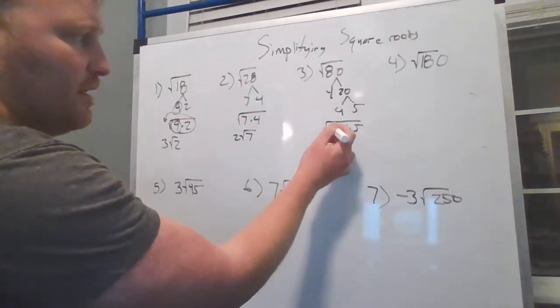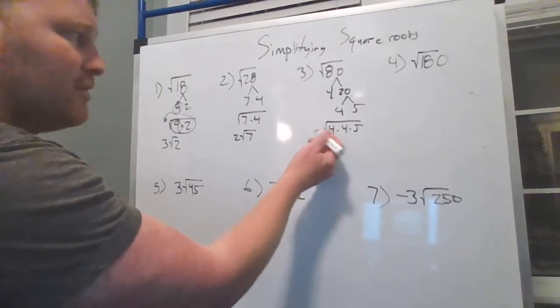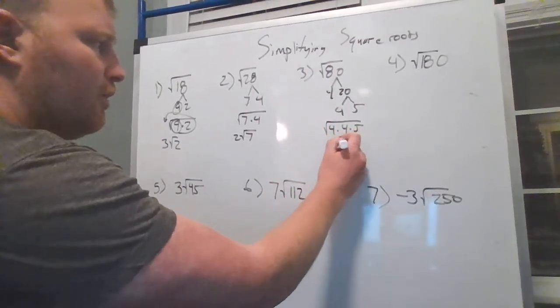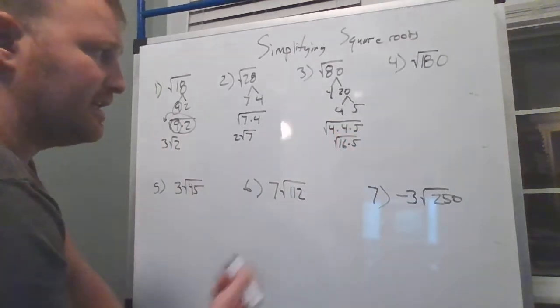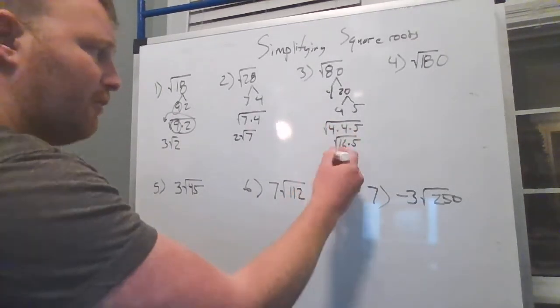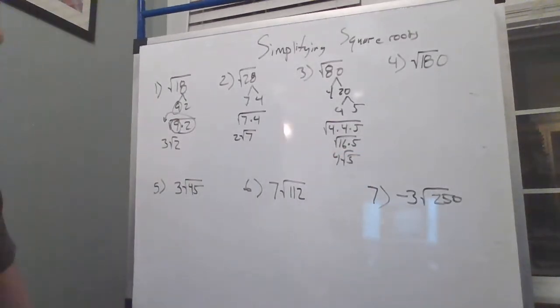So, I know that 4 times 4 times 5 is 80 broken down. Now, I can do this one of two ways. I can bring the 4 outside as a 2, this 4 outside as a 2, so then that'd be 2 times 2, which is 4. Or more importantly, let's combine these two because I know the square root of 16 is 4. So, square root of the 4 comes outside, so this is 4 radical 5.